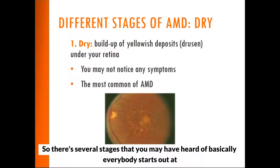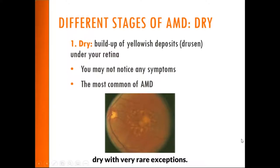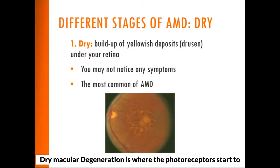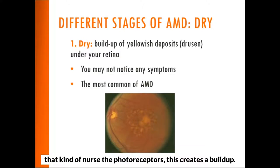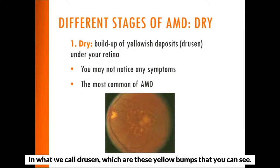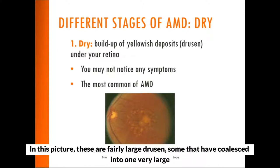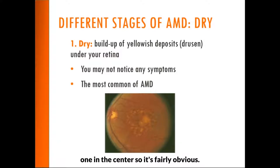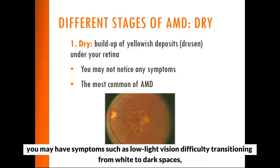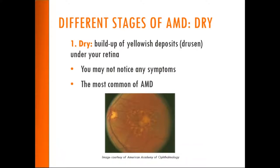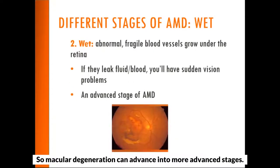There are several stages you may have heard of. Basically everybody starts out at the dry stage, with very rare exceptions. Dry macular degeneration is where the photoreceptors start to not transfer nutrients very well between themselves and the layer of cells that nurses the photoreceptors. This creates a buildup of what we call drusen — yellow bumps you can see in this picture. These can create some minor breakdowns in your vision, often not too noticeable, but you may have symptoms such as low-light vision difficulty, trouble transitioning from light to dark spaces, and difficulty with contrast.